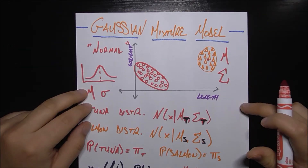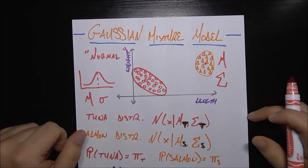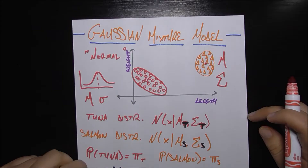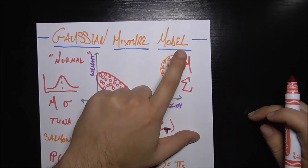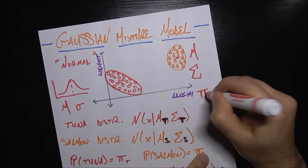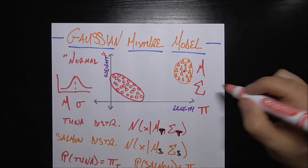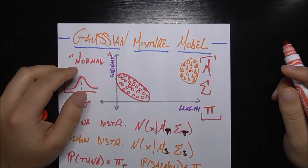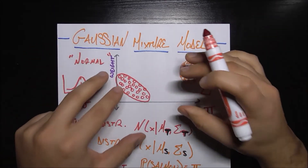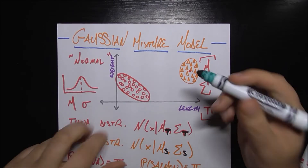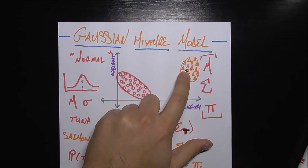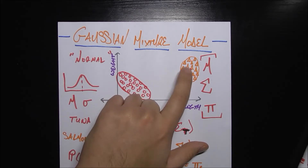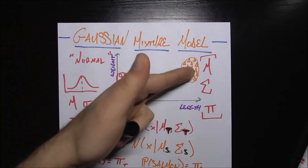So the Gaussian mixture model assumes that our classes — in this case salmon and tuna — are distributed in a normal distribution in however many dimensions we have data for; here we have two dimensions. The goal is to find the best parameters: mu, sigma, and pi, where pi simply tells us the probability of being in either class. The GMM tries to find the optimal values of these parameters to best fit our existing data, so that if a new data point comes in, we can mathematically determine which distribution it belongs to.